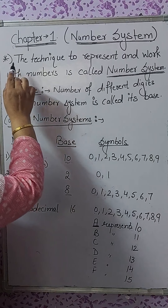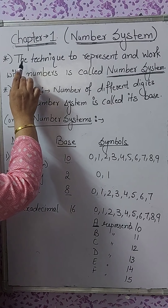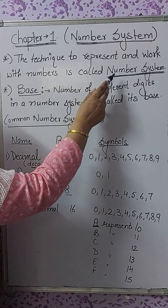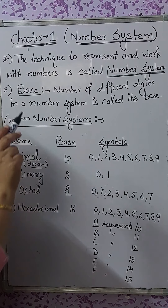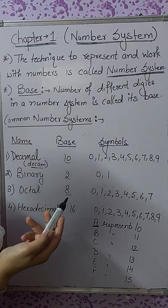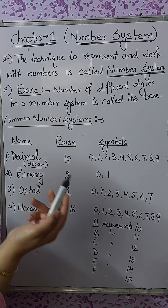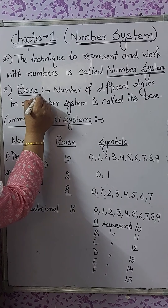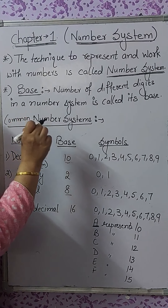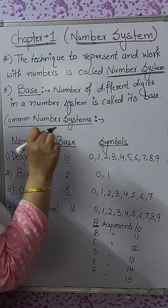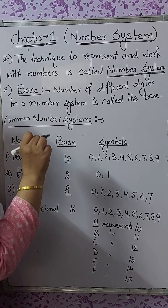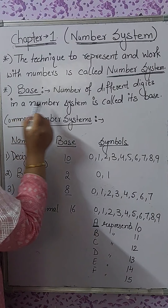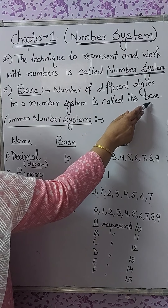First of all, we will discuss what is a number system. The technique to represent and work with numbers is called a number system, or the organized way of representing numbers is called a number system. The number of different digits in a number system is called its base.